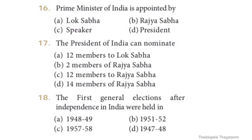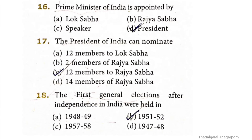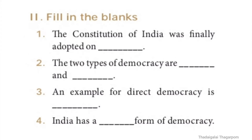Fifteenth question: the grant of universal franchise creates what? The correct answer is option A: social equality. Sixteenth question: the Prime Minister of India is appointed by whom? The answer is option D: President. Seventeenth question: the President of India can nominate twelve members to Rajya Sabha. Eighteenth question: the first general elections after independence in India were held in 1951 to 1952 - option B.